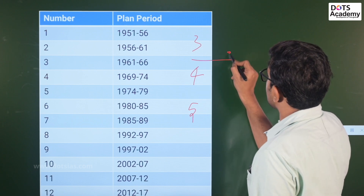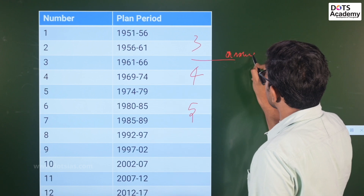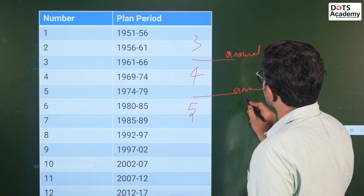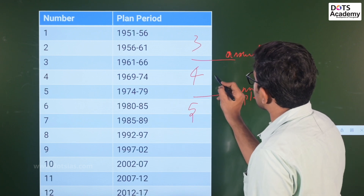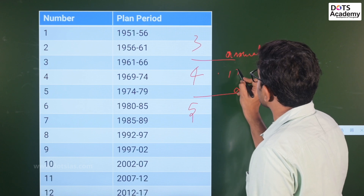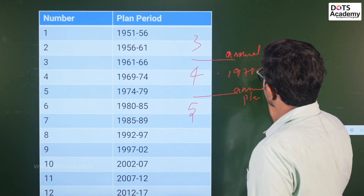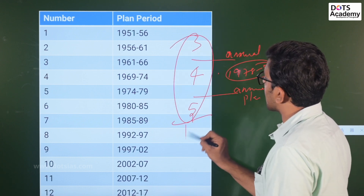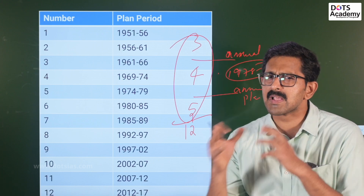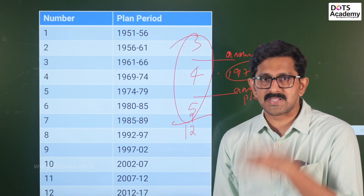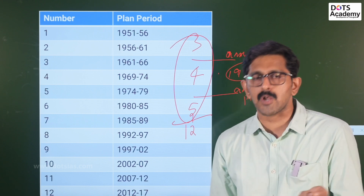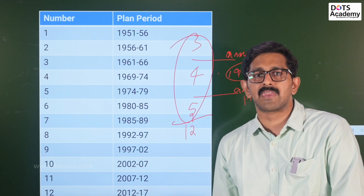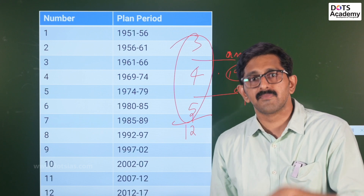After the first three five-year plans, annual plans were introduced. Then the next four five-year plans followed. After another set of annual plans from 1989 to 1992, five-year plans were resumed. In 1978, a rolling plan was introduced.